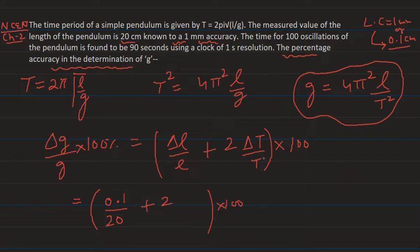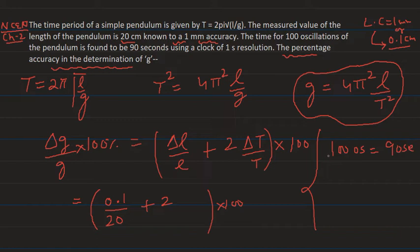The time period T is the total time divided by the number of oscillations. The time for 100 oscillations is found to be 90 seconds, so the total measured time is 90 seconds.